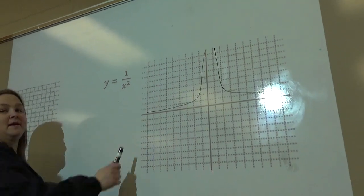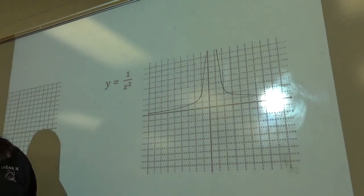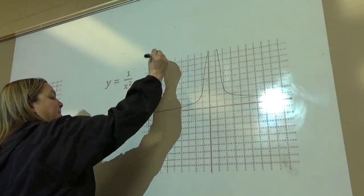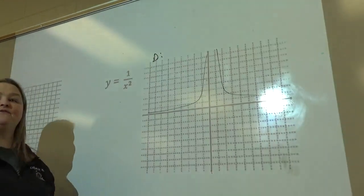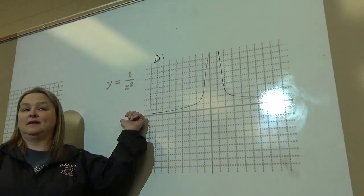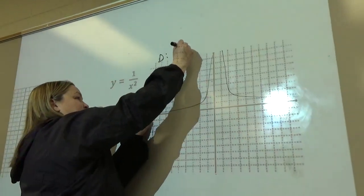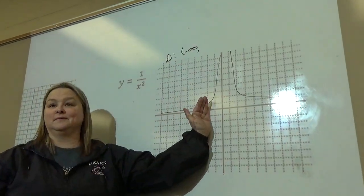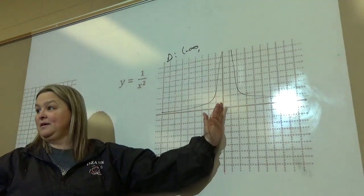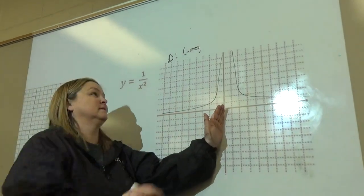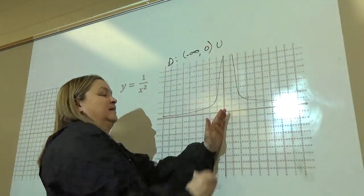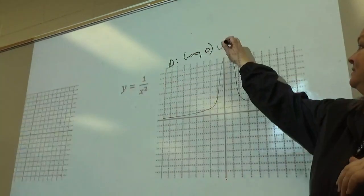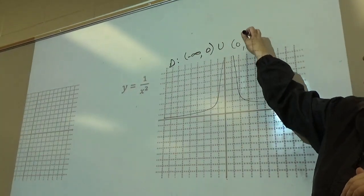Back on this graph, the domain. What would the domain be? What's my farthest left point? Negative infinity. Then it goes over until we get to zero and it stops. And then it starts back again at zero and goes to infinity.